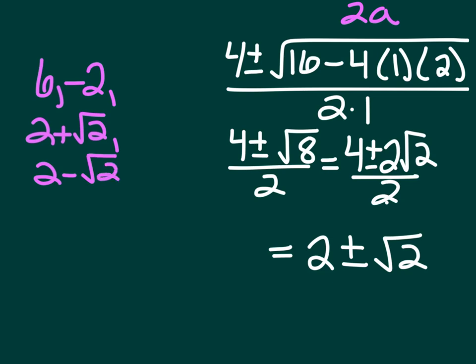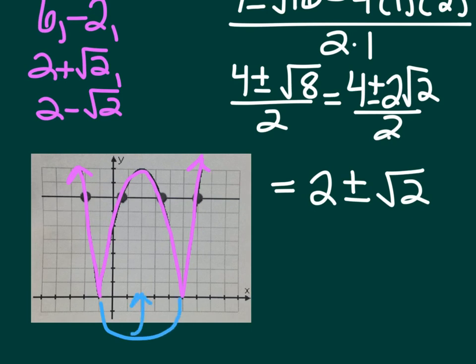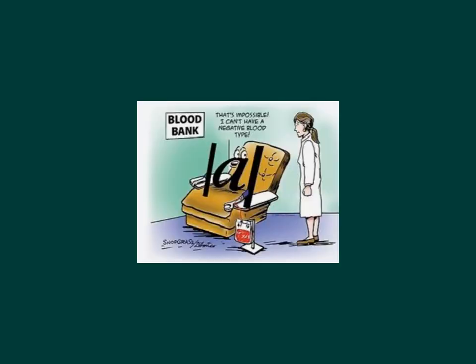So we have four answers: 6, negative 2, 2 plus the square root of 2, and 2 minus the square root of 2. We can check them all by plugging back into the original, or we can graph it. When you take the absolute value of a parabola, everything that was below the x-axis gets reflected back up, creating a W shape. Setting that equal to 7 gives four intersection points — negative 2, 6, 2 plus root 2, and 2 minus root 2 — confirming our answers. That's it for today's video. Have a great evening, and I'll see you tomorrow.